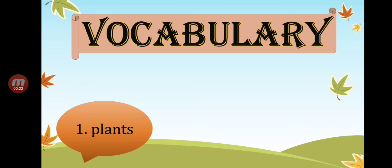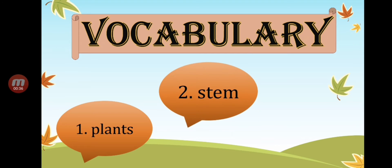Again: plants. Spell the word plants — P, L, A, N, T, S — plants. Very good. Let's proceed to number two. The second word is 'stem.' Everybody: stem. Let's spell the word stem — S, T, E, M — stem. Very good.